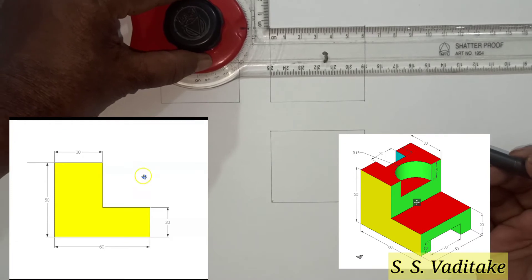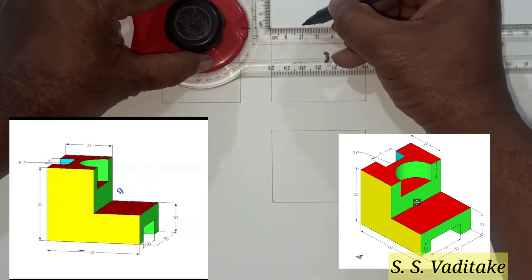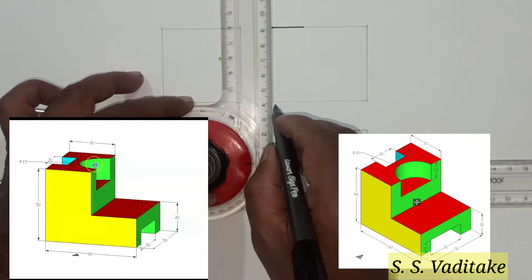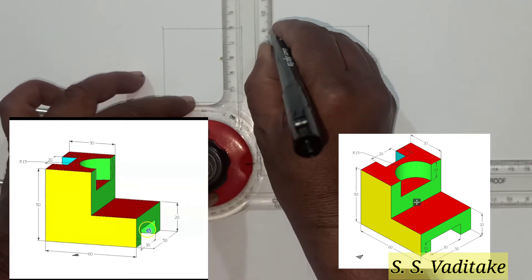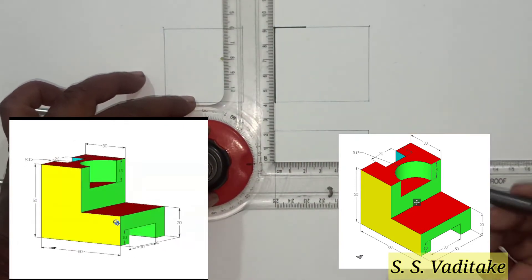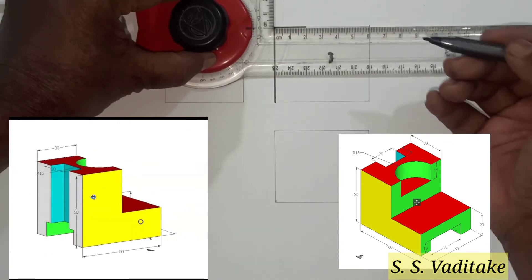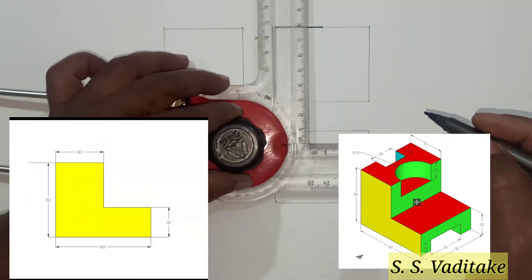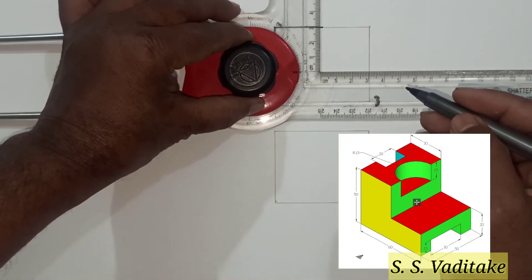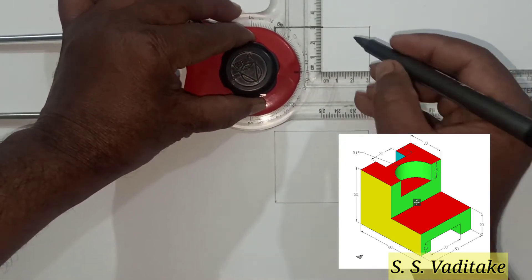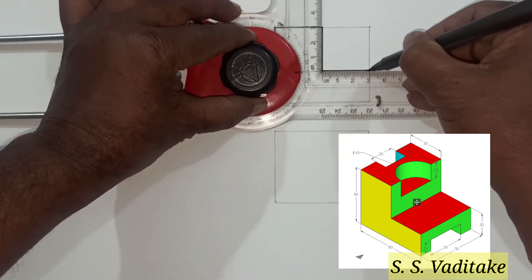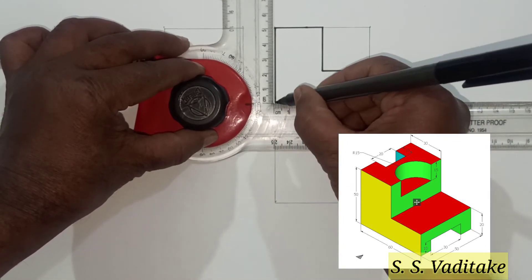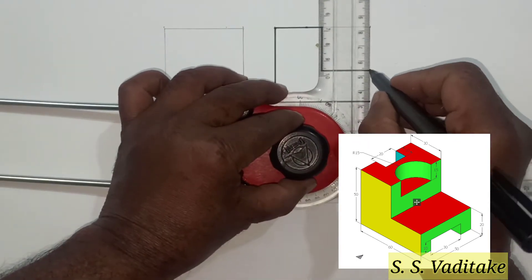Now try to draw the front view. In the front view, this yellow color surface, which is geometrically L-shaped, is clearly visible. Trace out all the dimensions and draw its front view using visible outline.